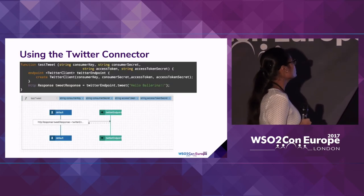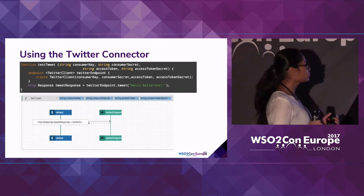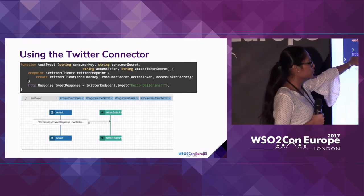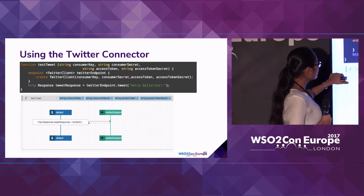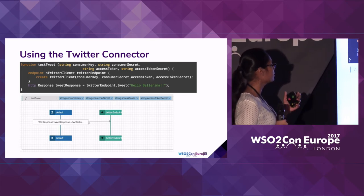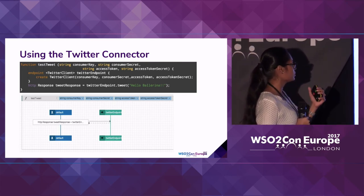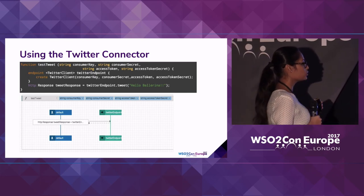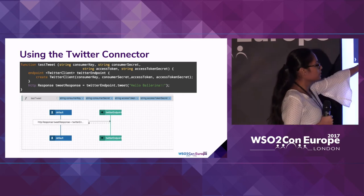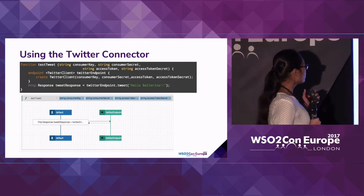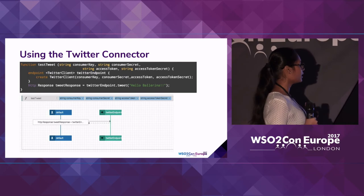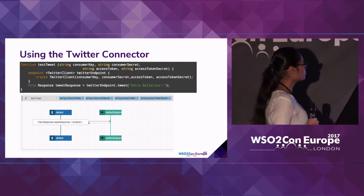How do we use this Twitter connector? It is not different from using an HTTP client connector. The only difference is when declaring the endpoint, you give the Twitter client as the connector type, and you create the Twitter connection by passing in the consumer key, consumer secret, access token, and access token secret required to create the connection to Twitter. Then you can simply invoke the tweet action with a status message. The visual view is the same as what we saw earlier for HTTP client connectors — we have the Twitter endpoint and the action arrows going to and from the default worker.